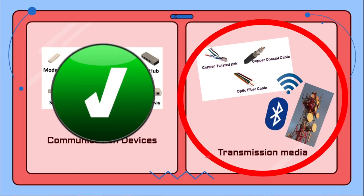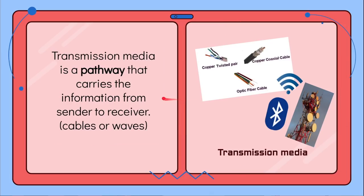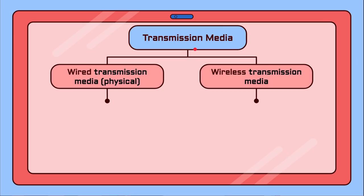Now let's look at transmission media. Just like its name suggests, transmission media is a pathway that enables data or information to travel from one device to another — those devices being the sender or receiver. There are two types of transmission media: the first is wired transmission media, also called physical transmission media.